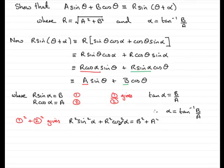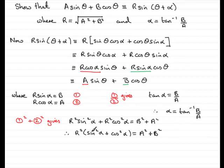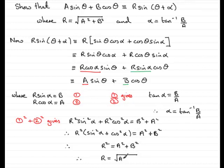Pulling out r² as a common factor gives r²(sin² α + cos² α) = a² + b² — I prefer to write it as a² + b², which is in alphabetical order. Now, sin² of an angle plus cos² of the same angle is a basic identity that always equals 1. So we have r² × 1, which is just r² = a² + b². Taking the square root of both sides, r equals the square root of a² + b².